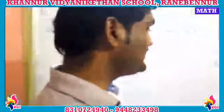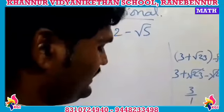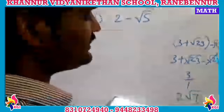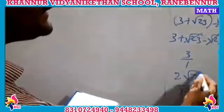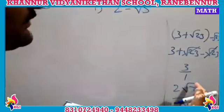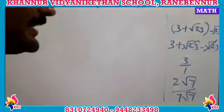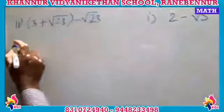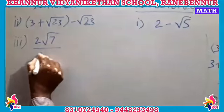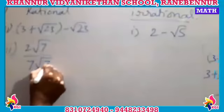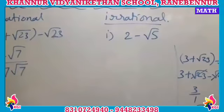The third one is 2√7 divided by 7√7. As we know, if the same quantities appear in the numerator and denominator they cancel. Here √7 appears in both numerator and denominator, so they cancel, leaving 2/7. Since 2/7 is rational, this goes in the rational column.